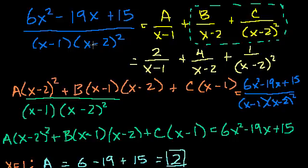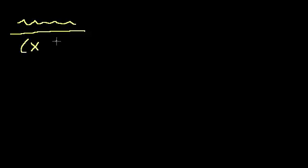What we did with the repeated factor generalizes to higher-degree terms. For example, if you had a polynomial over (x-a)^10, the decomposition would include terms from 1/(x-a) all the way up through 1/(x-a)^10, giving you 10 terms total.